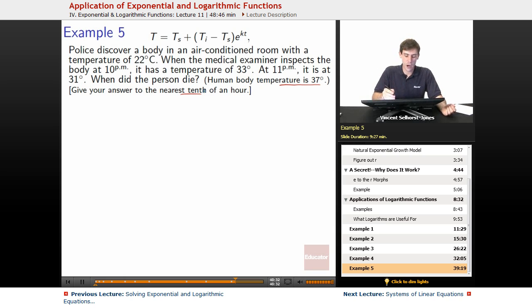Let's get our pieces of data from this. We're told that the room has a temperature of 22 degrees. So the surrounding temperature of our room is 22. The initial temperature of our body is 37 degrees. Human bodies are 37 degrees when they're alive.